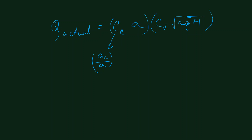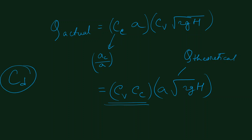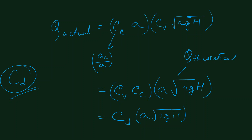This can be rewritten as Cv × Cc × A × √(2gh), where A × √(2gh) is the theoretical discharge. The combined coefficient Cv × Cc is the coefficient of discharge, Cd. Therefore, the actual discharge = Cd × A × √(2gh), meaning actual discharge equals Cd times the theoretical discharge.